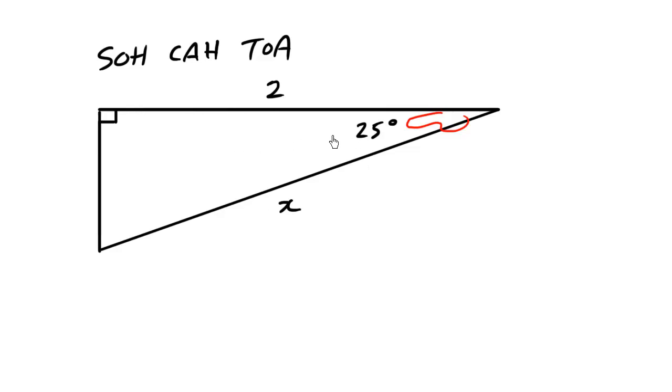Here's our angle. We put our finger here and then we're interested in the adjacent and the hypotenuse. This is the opposite, this is the adjacent and the hypotenuse. The adjacent and the hypotenuse, so we're going to use cosine. The cosine of some angle, 25 degrees, is equals to the adjacent over the hypotenuse, which is 2 over X.